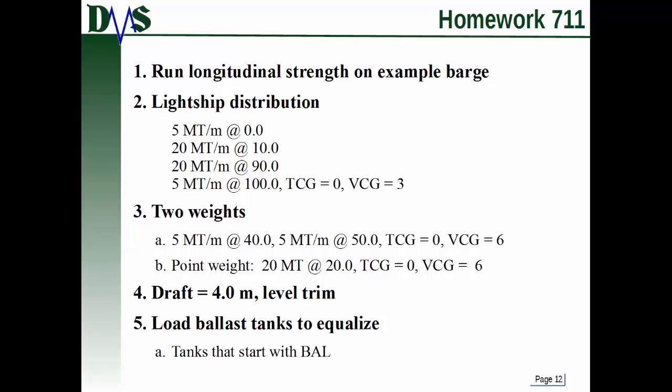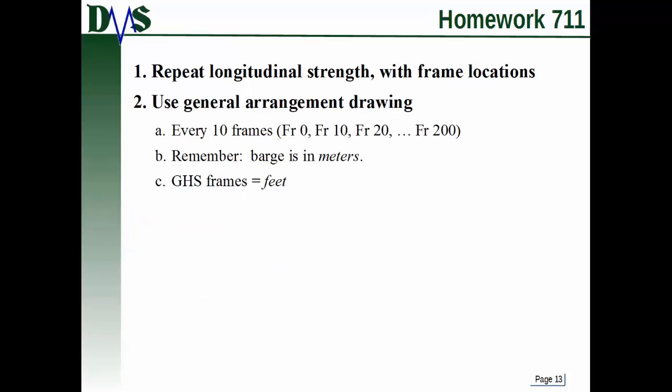So that you can make that decision about whether or not it's worth the effort to convert point weights to distributed weights. Now as to the rest of the information, I want you to give this barge a draft 4 meters and level trim. And load all of your ballast tanks to equalize. So just load all the ballast tanks that start with BAL and have GHS automatically load them to equalize weight and equalize trim. You should remember how to do that from the homework tutorials on basic hydrostatics. If not, go ahead and take a look at those tutorials again.